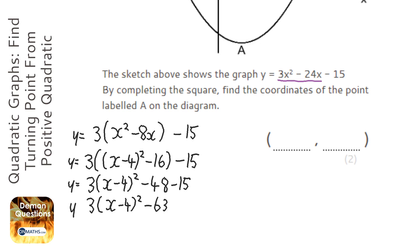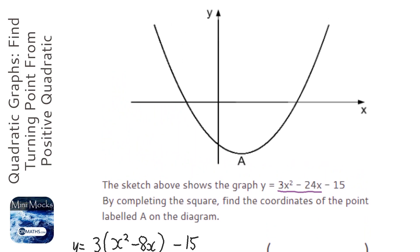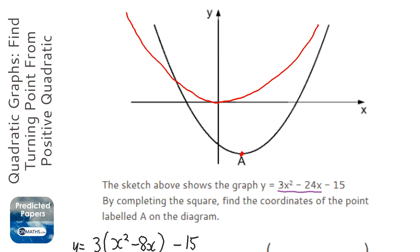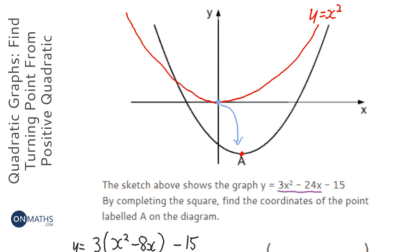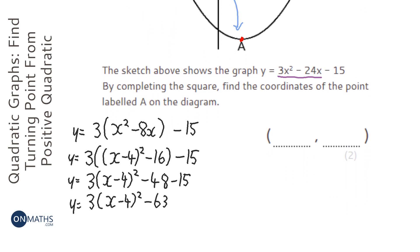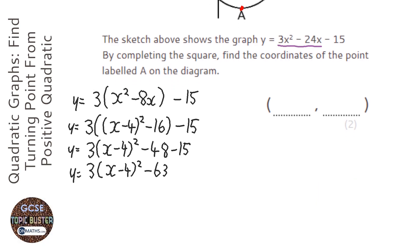When trying to find a turning point — which is effectively what we're being told to do here — the first thing is to figure out what the normal base function would be without all the clutter. The function is based on y equals x squared. The turning point for y equals x squared is (0, 0), so we need to figure out how to get from that turning point to the one on the function we're interested in. Let's compare the two functions.